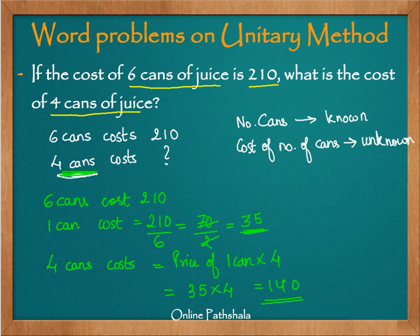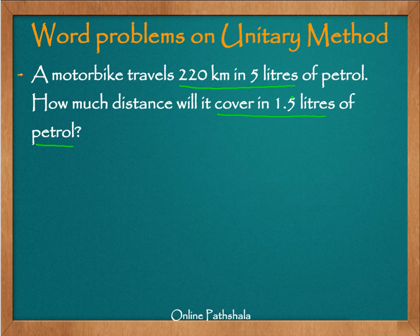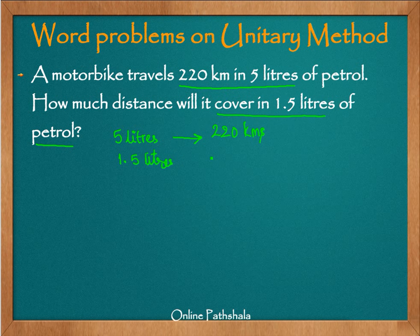This is how we use the unitary method to calculate the cost of a different number of cans. Now let us look at another example in a different context. A motorbike travels 220 kilometers in 5 liters of petrol — how much distance will it cover in 1.5 liters? We know that liters appear on both sides, and the distance is unknown in one case. So: in 5 liters, the motorbike can cover 220 kilometers. Therefore, in 1.5 liters, what distance can be covered?